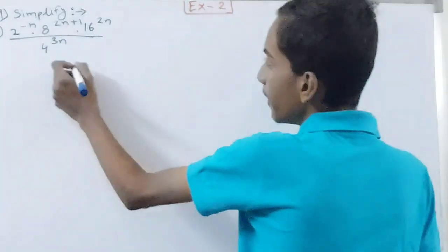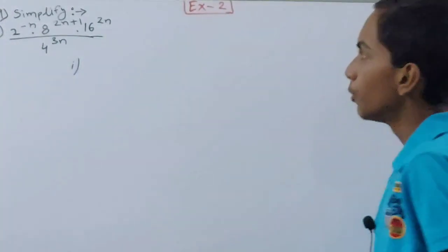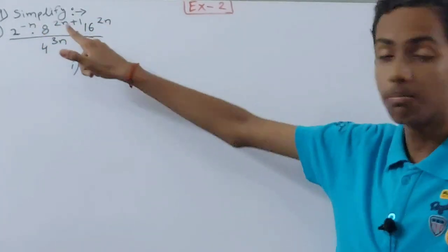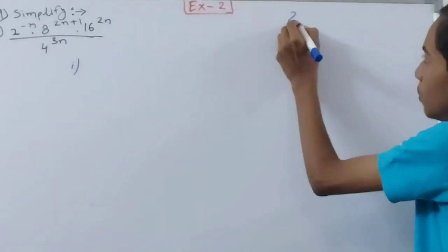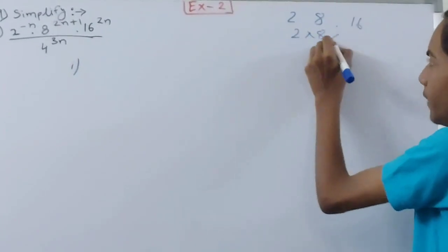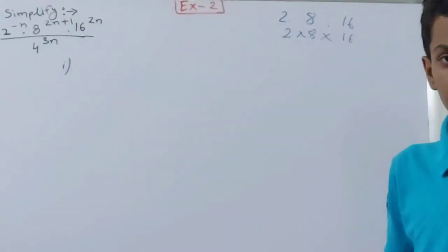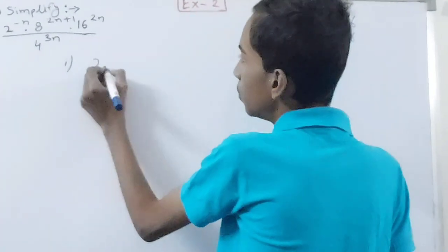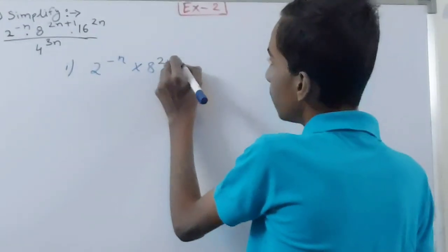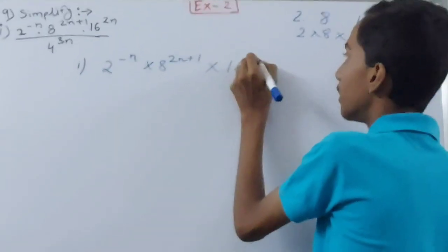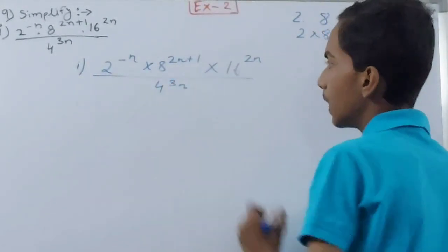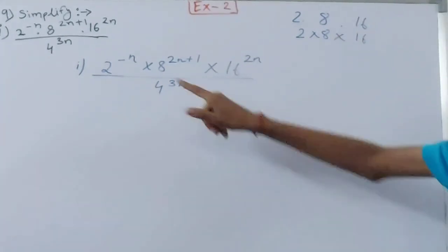The first one: we have 2 to the power minus n — this dot means multiplication — into 8 to the power (2n+1) into 16 to the power 2n, upon 4 to the power 3n.